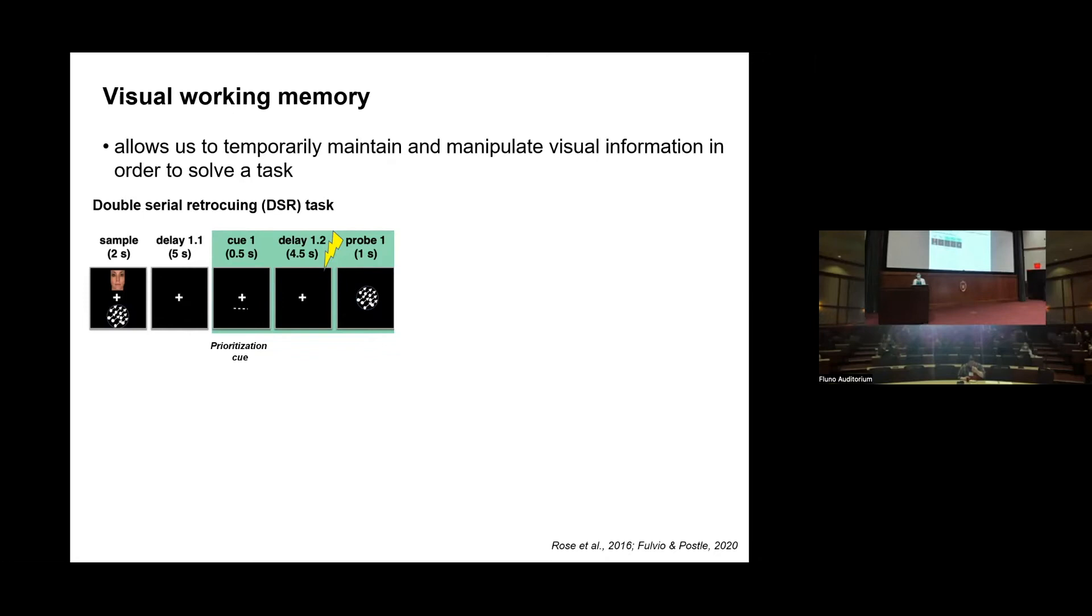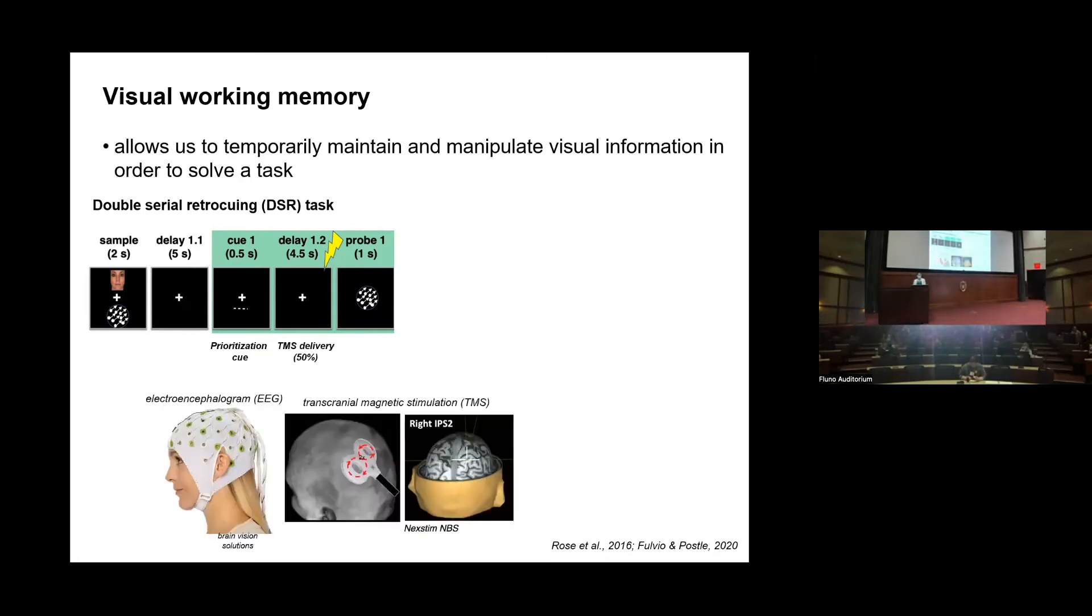So then there's another delay period and then there's the test. You'll notice this little lightning bolt here in the delay period, and that corresponds to what we call transcranial magnetic stimulation or TMS delivery. TMS is, in our case, a single pulse, a magnetic pulse to the scalp. It doesn't actually feel like a shock—we use the lightning bolt just to depict it. Most people say it feels more like a little flick. Essentially, TMS is used to alter brain function and we look at corresponding impacts.